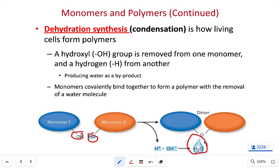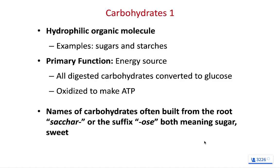Some organisms are better at dehydration synthesis than others. Organisms that live in the desert get most of their water from dehydration synthesis, so you don't need to water them. They also have powerful kidneys and hardly ever urinate. I used to have desert gerbils in my classroom and went nine months without changing the bedding — they never peed, so it never went bad.